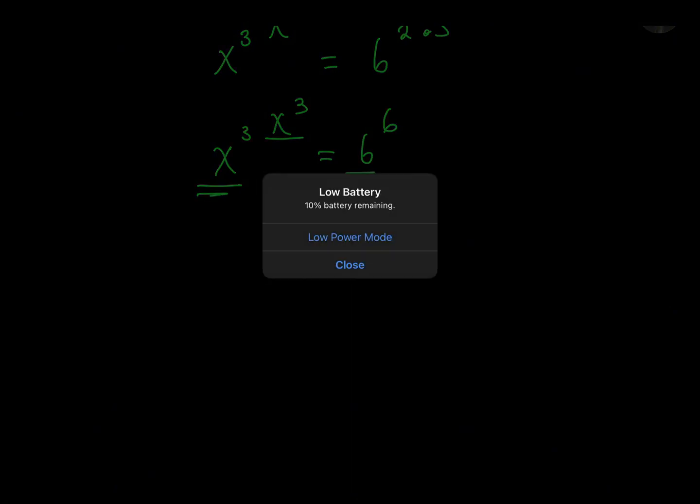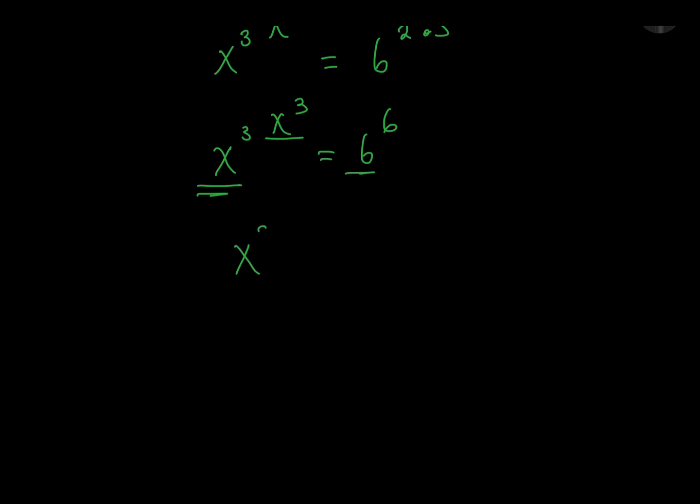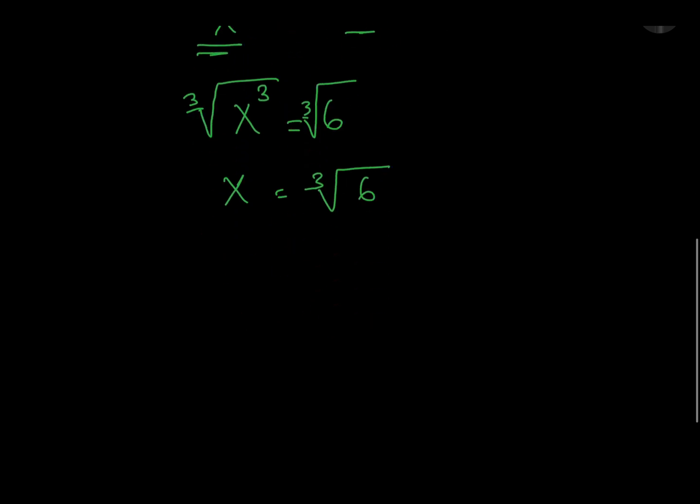x cubed is equal to 6. If we take a cube root of both sides of our equation, we'll have x equal to cube root of 6 as our answer. So cube root of 6 is our answer.